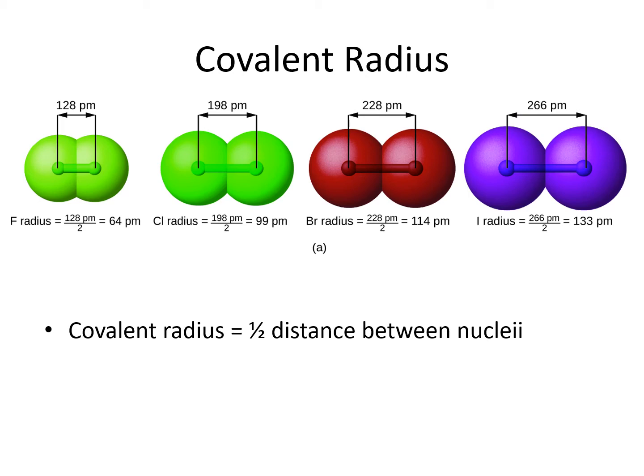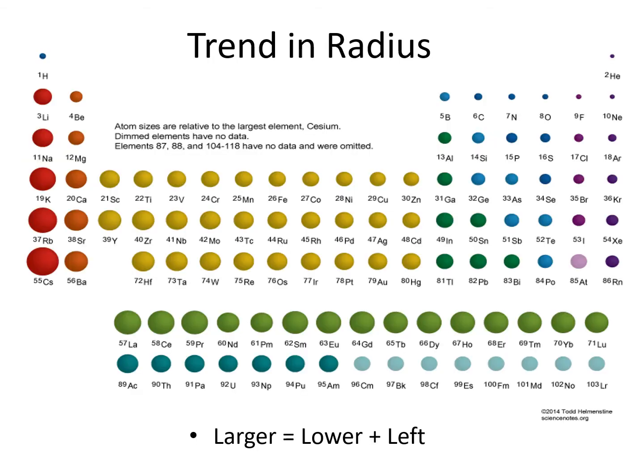Our first periodic trend is atomic radius. For covalent diatomic molecules, the radius can be found by taking the distance between the two nuclei and dividing by two. The overall trend for atomic radius is that larger is lower and left on the periodic table. You can remember this because they all start with L. So helium is the smallest atom since it's in the upper right, and cesium is the largest atom because it is in the lower left.